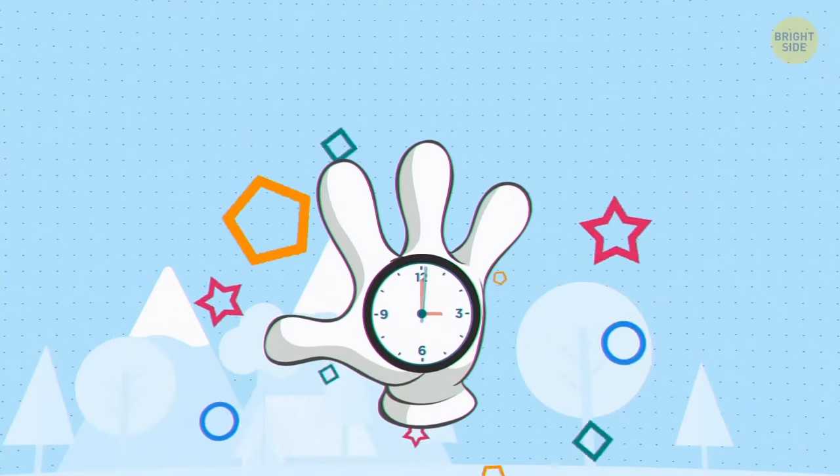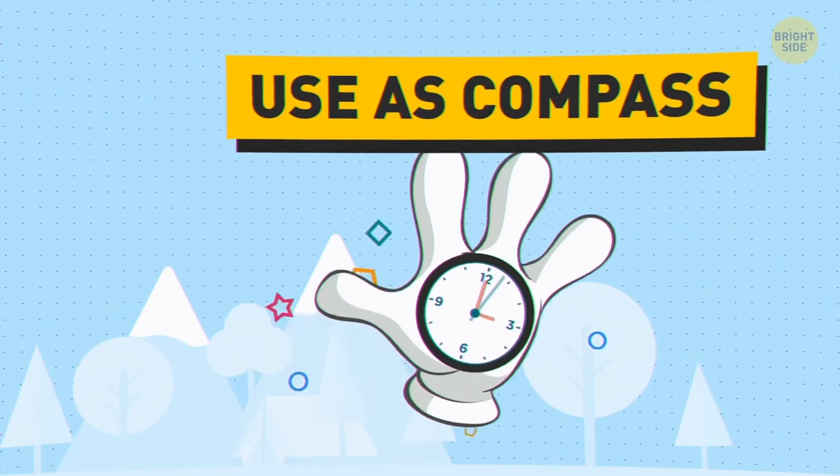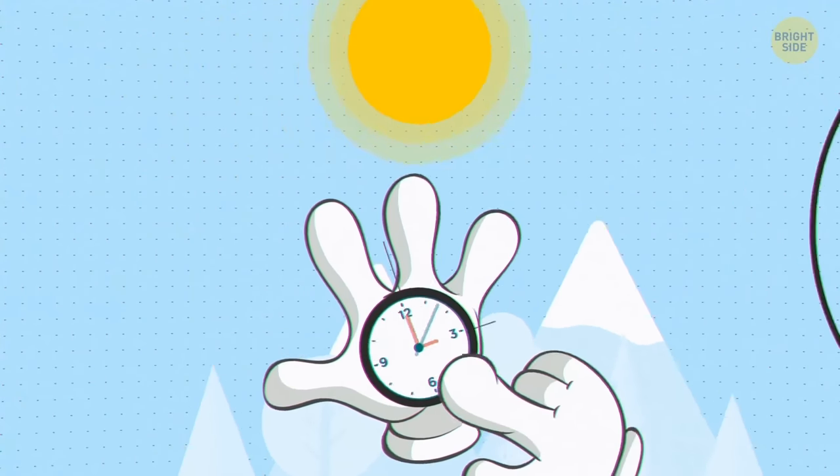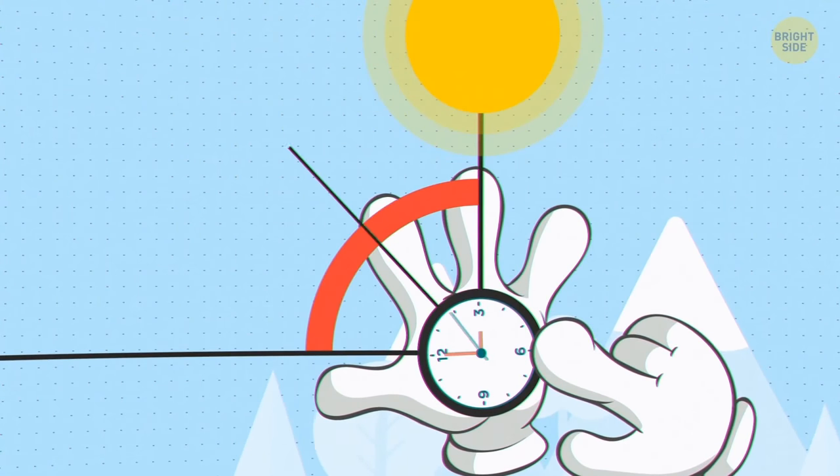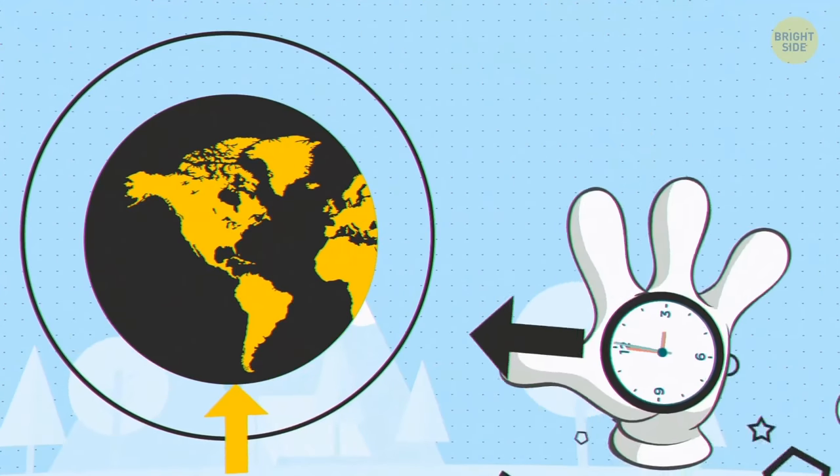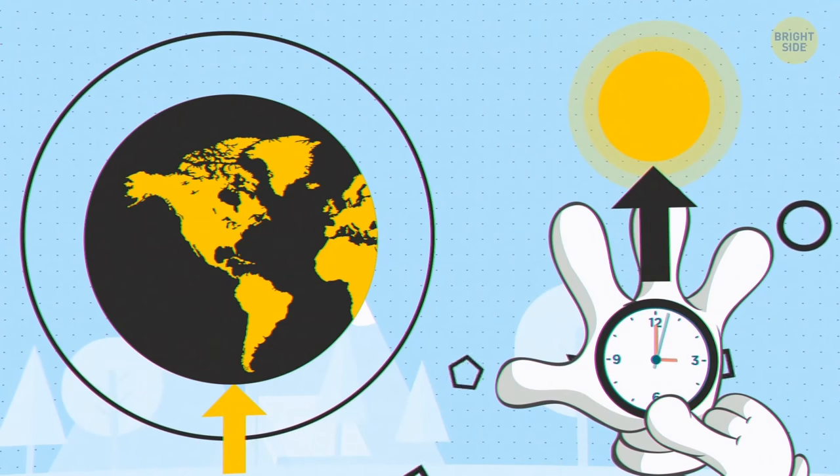If you happen to have an analog watch, you can use it as a compass. Place it flat on your palm. In the northern hemisphere, align the hour hand with the sun. South will be halfway between the hour hand and the 12. If you're in the southern hemisphere, point the 12 directly at the sun instead.